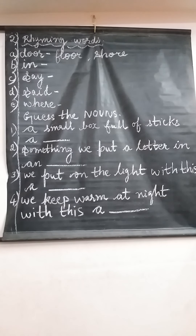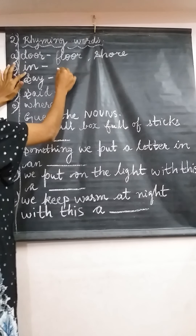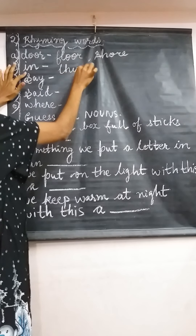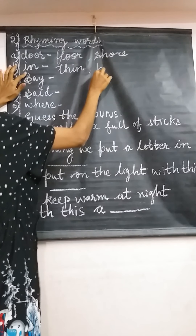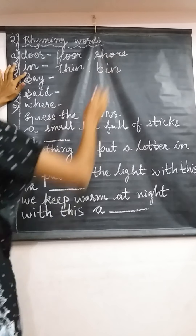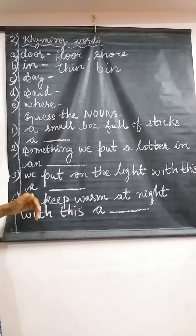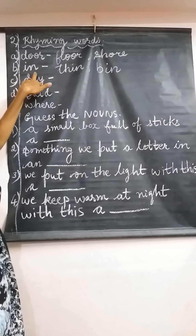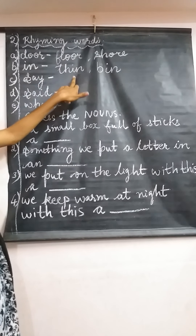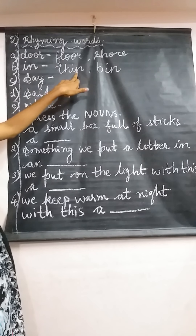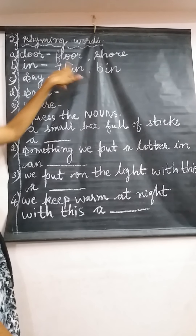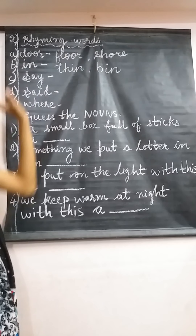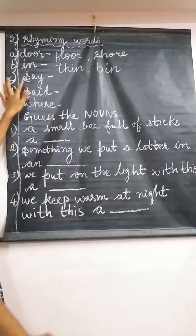Now let's move to the next word: 'in'. What is the rhyming word for 'in'? We can write 'thin', then 'bin'. Two examples are already given to help you understand. You can observe that in, thin, and bin all share the same ending sound '-in', so they have the exact same sound.